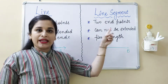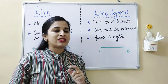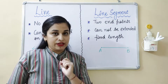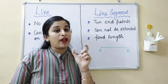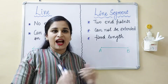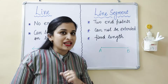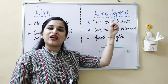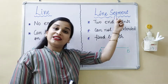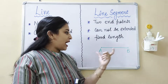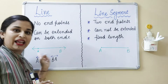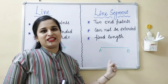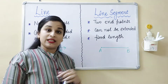Our next topic is line segment. First of all, you must understand what is the meaning of 'segment.' Segment means part — a piece of anything cut and taken out separately. So as the name suggests, a line segment describes itself: it is a small piece of a line. As you can see, this segment AB is cut from line AB and taken separately — so this is line segment AB.